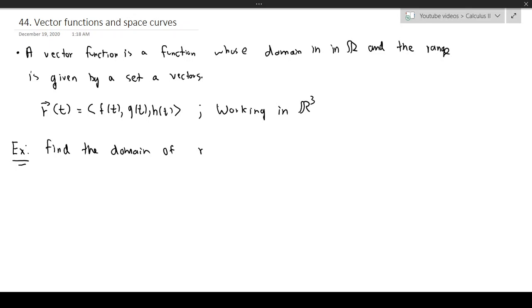So it's going to be r(t) is equal to the natural log of (t minus 1) plus e to the t times j plus root t times k. Now of course in bracket notation you can write this as ln(t-1), e to the power of t, and root t. Well, the domain would just mean that all of these things have to be defined.